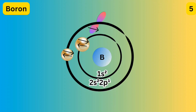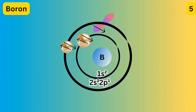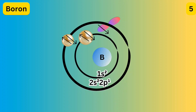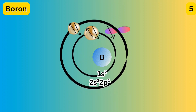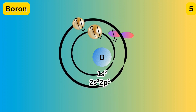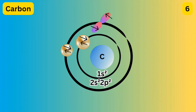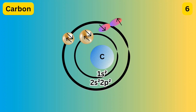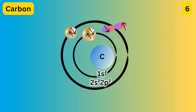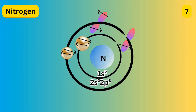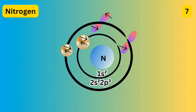There are five electrons in boron: two in 1s, two in 2s, and one in the 2p orbital. There are six electrons in carbon, so the electronic configuration is 1s2 2s2 2p2. There are seven electrons in nitrogen, so the electronic configuration is 1s2 2s2 2p3.